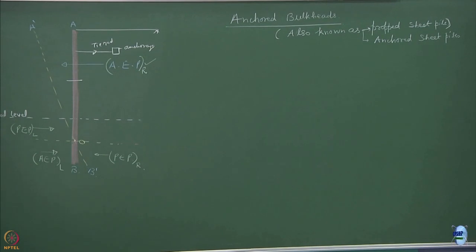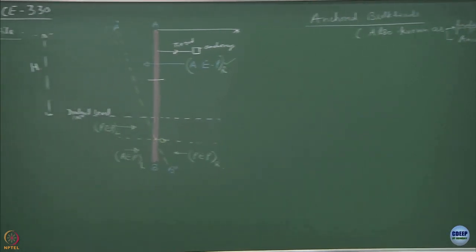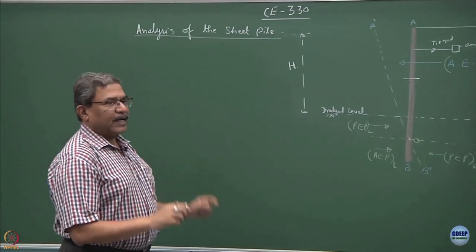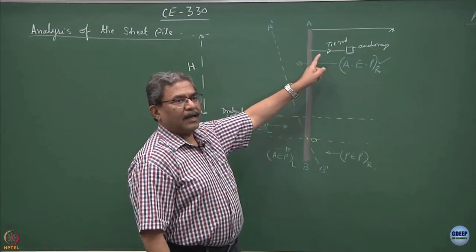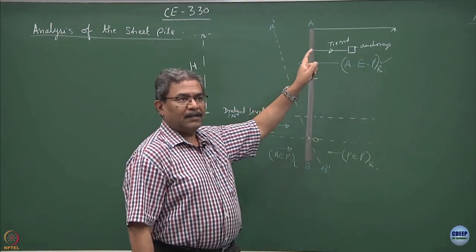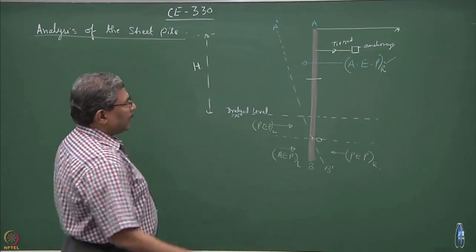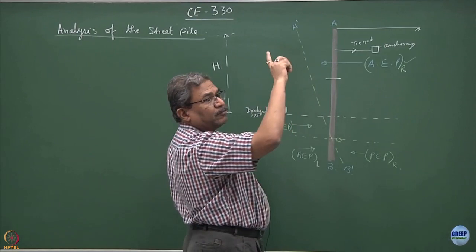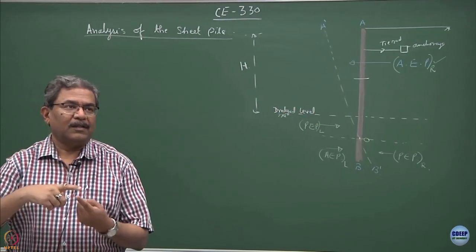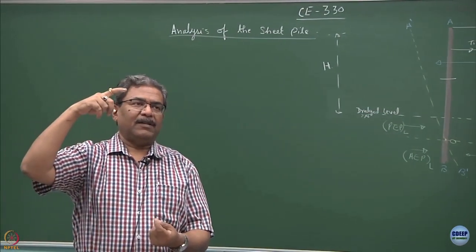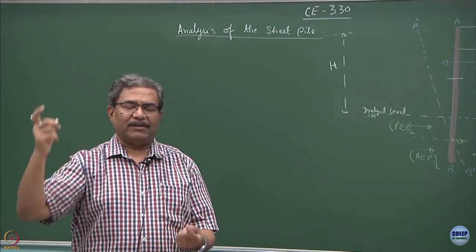The issue is how I am going to analyze this type of situation. First of all, understand why propping has been done or why tie rod has been included. You must have realized that the bending moment is a function of h cube. So, the more high you go, the bending moments are going to become extremely high.